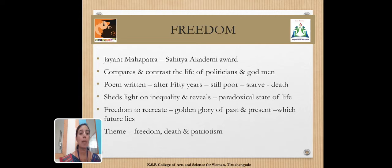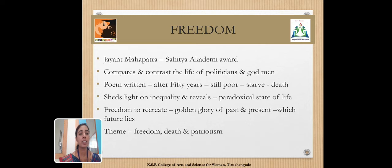The next poem, 'Freedom,' was written by J.N. Mohanty, a Sahitya Akademi Award winner. This poem compares and contrasts the lives of politicians and godmen. The poem was written after 50 years of independence. Even though India gained independence, many people are still poor and starving. The poem sheds light on inequality and reveals the paradoxical state of life. It calls for freedom to be recreated, linking the golden glory of the past and present toward the future. The themes of the poem are freedom, death, and patriotism.